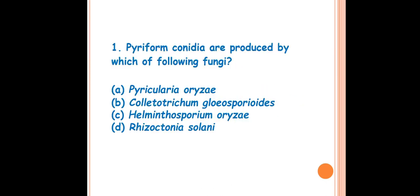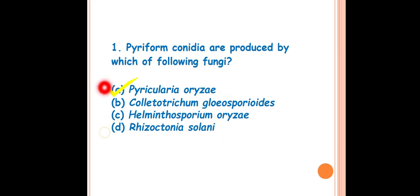The first question is: Pyriform conidia are produced by which of the following fungi? The answer is A — Pyricularia oryzae. Pyricularia oryzae is the causal organism of rice blast disease. This is the imperfect stage or conidial stage, and in this stage it produces pyriform conidia which consist of three cells.